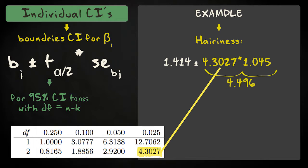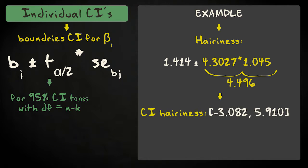This results in a margin of error of 4.496, and an interval that ranges from minus 3.082 to 5.910. Again, a very wide interval containing zero, which is not surprising given the low number of observations.